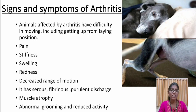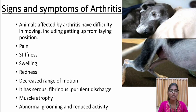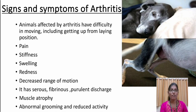The signs and symptoms of arthritis: the most common symptoms observed are difficulty in moving, including getting up from a laying position. Other symptoms include pain, stiffness, swelling, redness, decreased range of motion, fibrinous discharge, muscle atrophy which means thinning of muscles, abnormal grooming, and reduced activity of the animal.